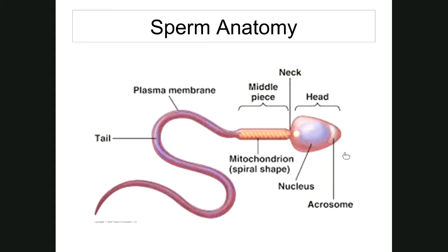The acrosome contains an enzyme called hyaluronidase, which aids the sperm in penetrating the oocyte by digesting through the hyaluronic acid covering it. If a sperm does not have hyaluronidase in its acrosome, it will not be able to fertilize any egg. The mid piece contains mitochondria which use the sugar fructose to produce ATP for locomotion, powering the tail — called a flagellum — which propels the sperm.